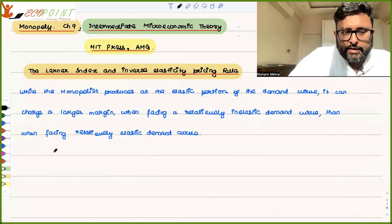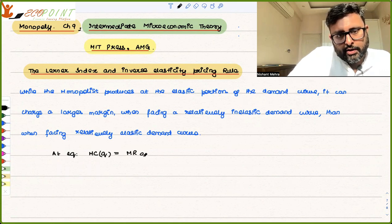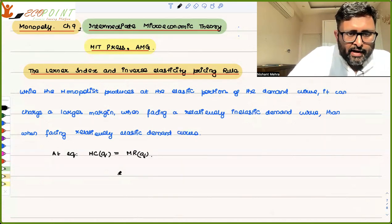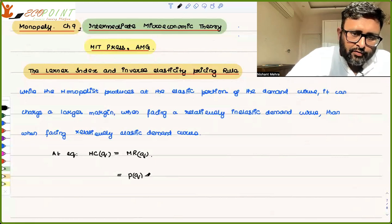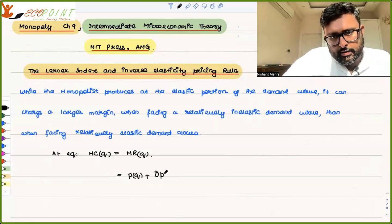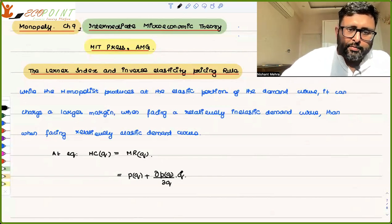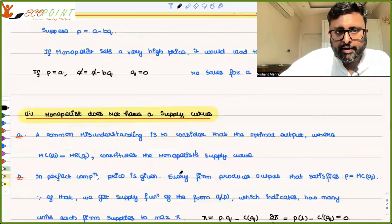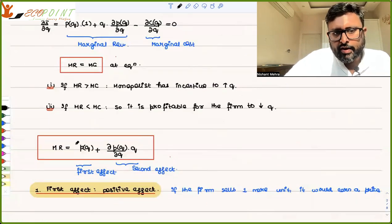At equilibrium, MC(Q) is equal to MR(Q). You have seen this. And you have also seen that marginal revenue can be written as: MR = P(Q) + (∂P(Q)/∂Q)·Q. We have derived this earlier, so if you have not seen this, please go to the previous recordings.